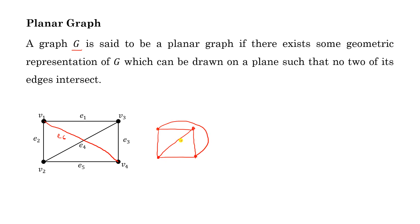Now look at this graph — here no two edges intersect with each other. This graph is a complete graph of four vertices, so for this graph we have a geometric representation where no two edges intersect, so we say this graph is a planar graph. It means merely by inspection we cannot say whether a graph is planar or not; we have to go for various geometrical representations and check if we can find one where no two edges intersect. Only then can you say this graph is a planar graph.